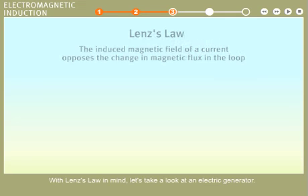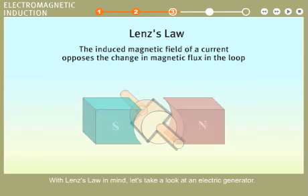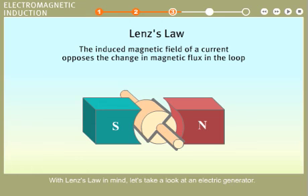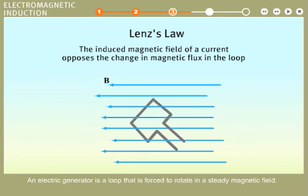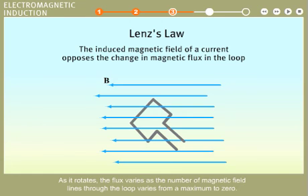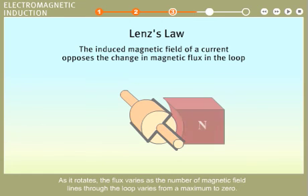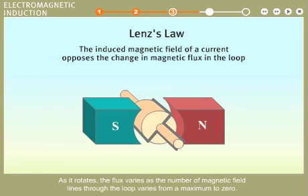With Lenz's law in mind, let's take a look at an electric generator. An electric generator is a loop that is forced to rotate in a steady magnetic field. As it rotates, the flux varies as the number of magnetic field lines through the loop varies from a maximum to zero.